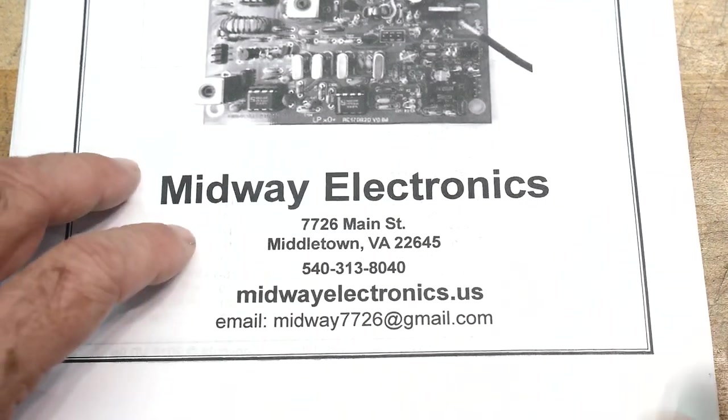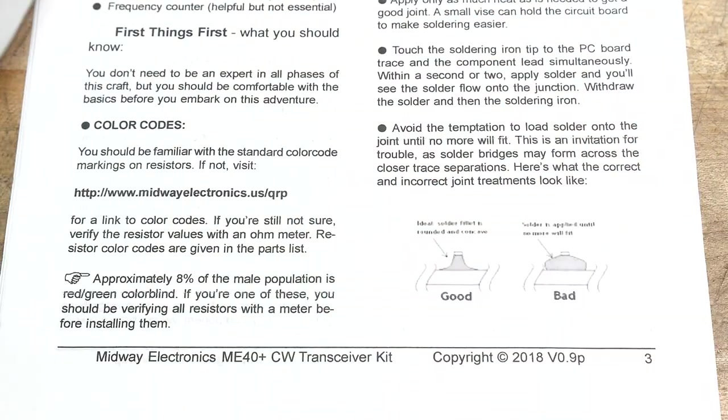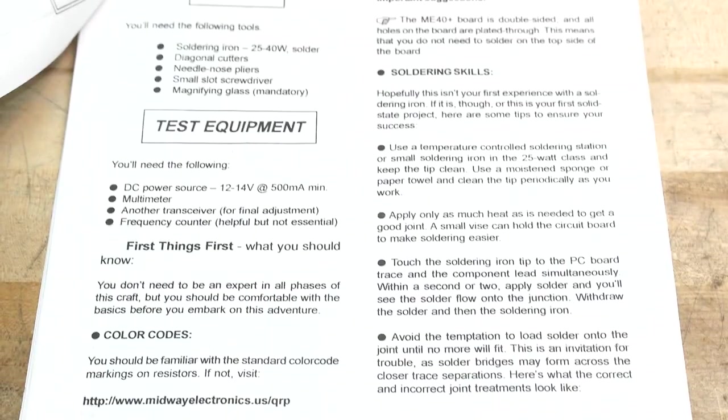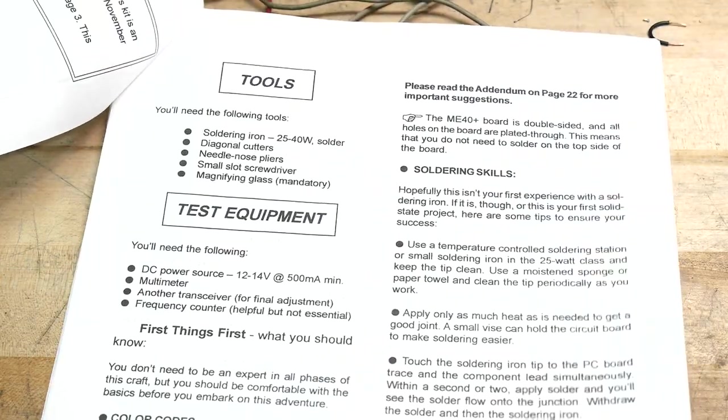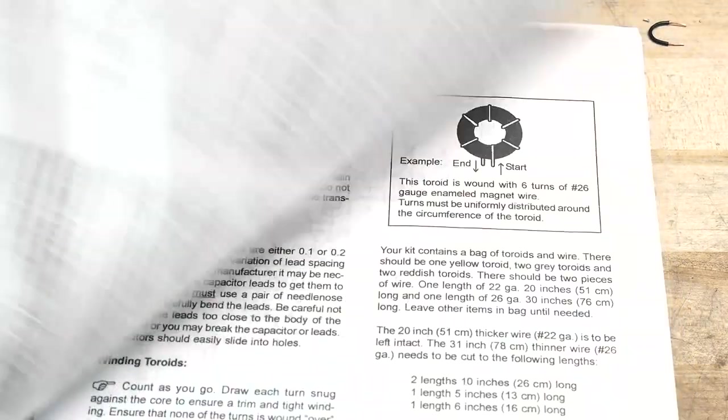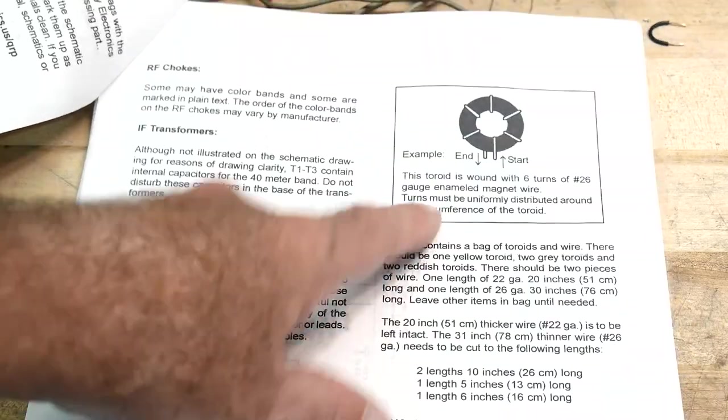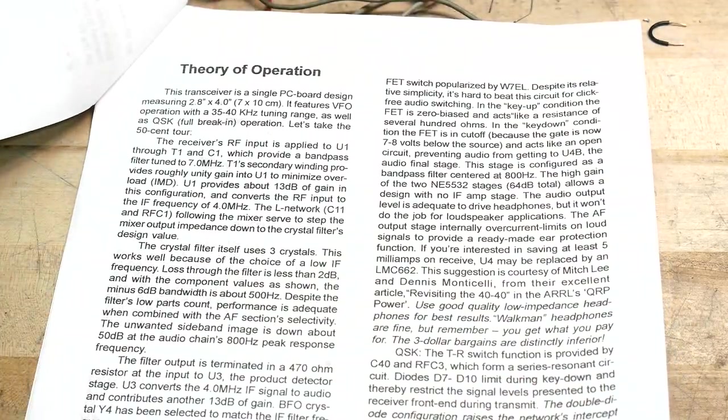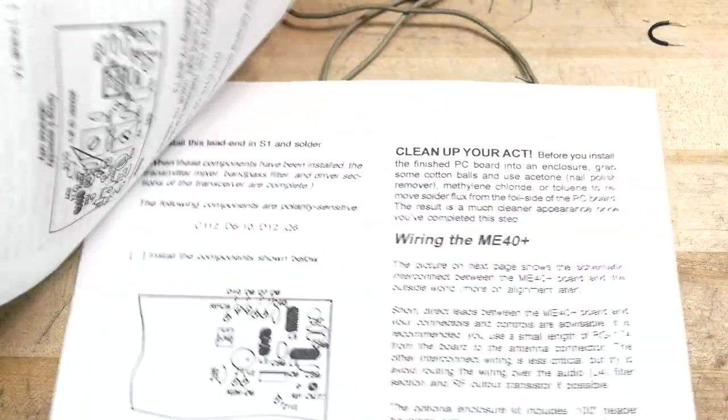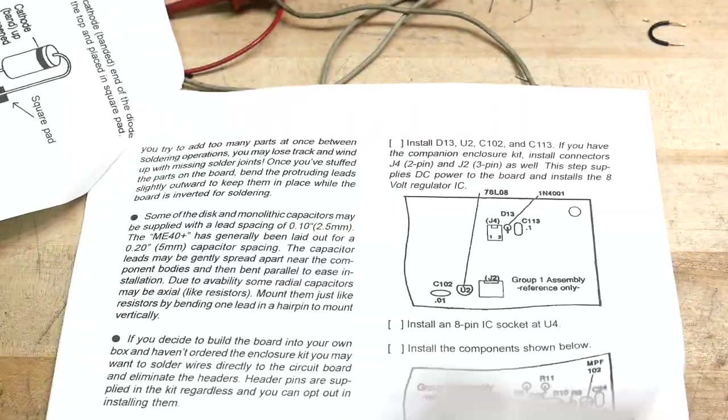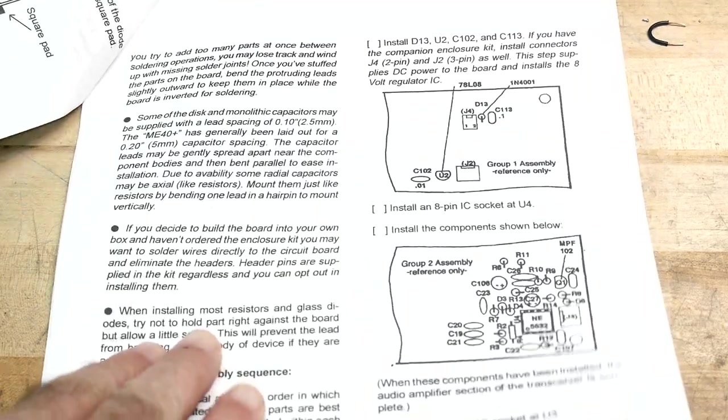Let's look through the manual here. This is what you get. It's pretty nice, very well done. What tools you'll need, how to solder correctly, how you'll wind toroids. We'll go over the schematic, there's a theory of operation, and then there's an actual assembly procedure.